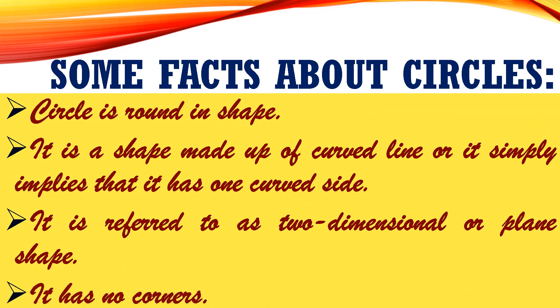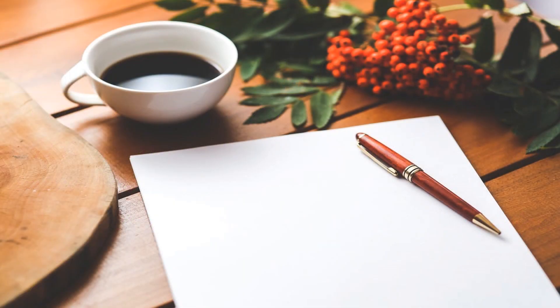Now let's learn some facts about circles. Circle is round in shape. It is a shape made up of a curved line, or it simply implies that it has one curved side. It is referred to as a two-dimensional or plain shape. It has no corners. In fact, you can find circles in everyday life — it is just about everywhere. If you have a cup on your desk, the shape of its rim is probably a circle.